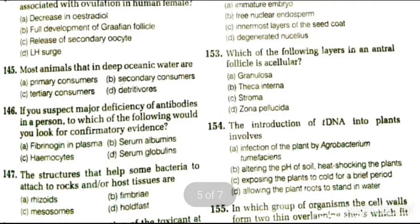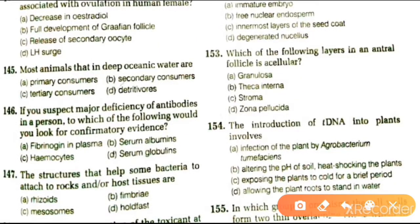Next question: if you suspect a major deficiency of antibodies in a person, which component would you look for? Options are fibrinogen plasma, serum elements, hemocytes, and serum globulins. We would check the serum globulins.